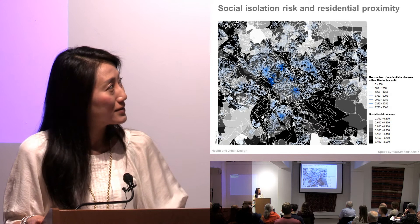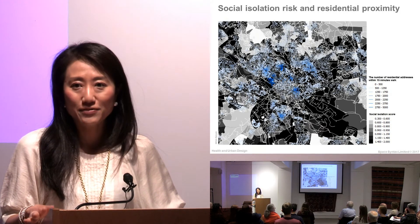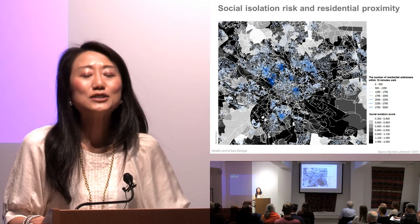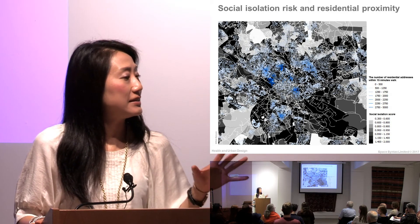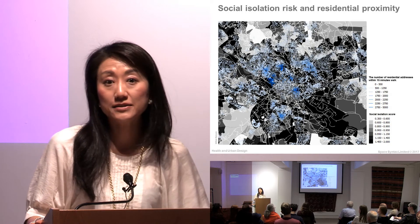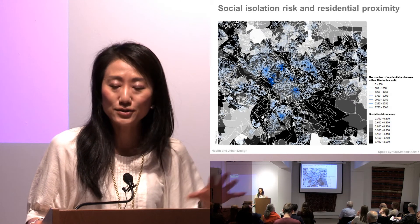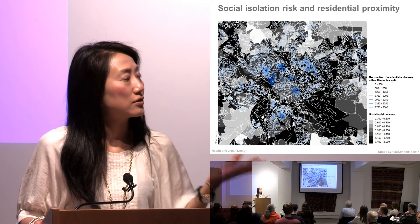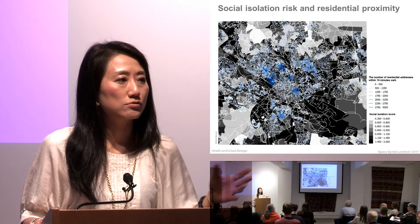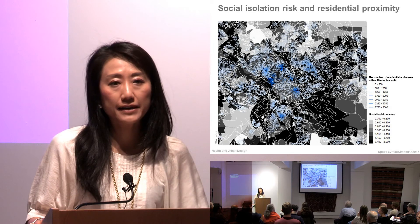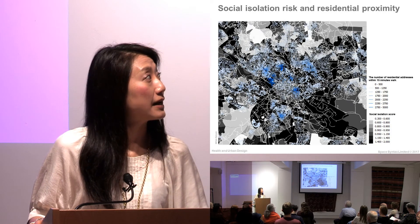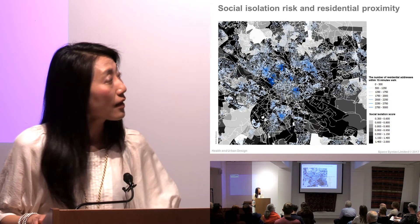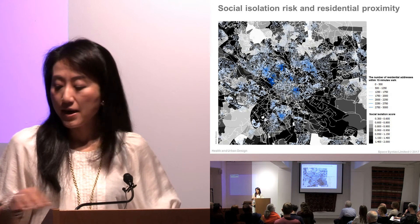Whereas in other parts, you have low density of neighbours and a high-risk population. Clearly, the sorts of interventions needed might be different in these two different types of areas. This is not yet compared with actual isolation data, but once we have that data, we can overlay the information to see where actual isolation is experienced.